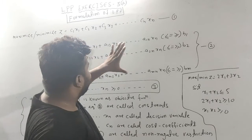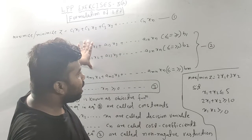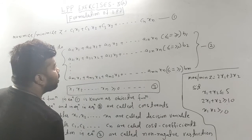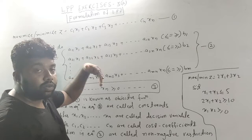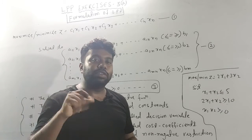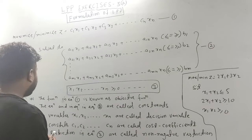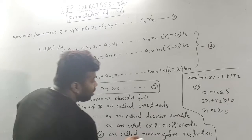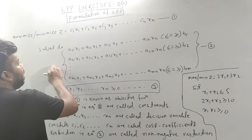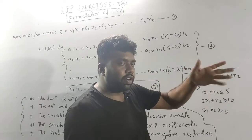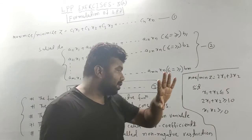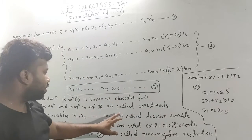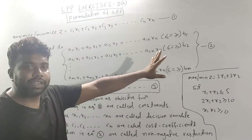Equation 1 is the maximize or minimize equation — that is the objective function. Equation 2 contains the constraints, which use ≤, ≥, or = signs — that is why they are called constraints. The objective function is equation 1 and the constraints are equation 2.